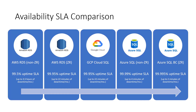Here's a quick overview of the availability SLA guarantees provided by the major cloud database service platform providers. Both AWS RDS and GCP Cloud SQL offer 99.95% uptime SLA, which translates to up to about 22 minutes of downtime per month. Even the non-Zone Redundant Azure SQL configuration offers four nines of availability SLA. The Zone Redundant Business Critical Azure SQL configuration offers four and a half nines — 99.995% uptime SLA — which translates to only up to two minutes of downtime per month, making Azure SQL in Zone Redundant configuration the clear market leader in availability guarantees.